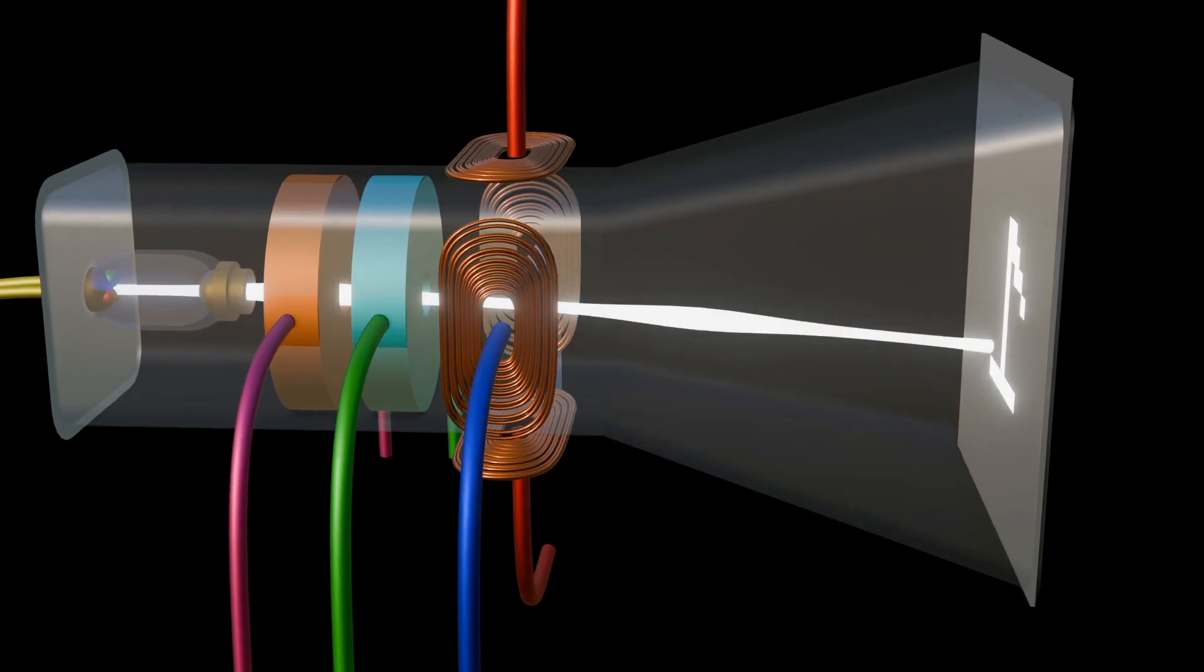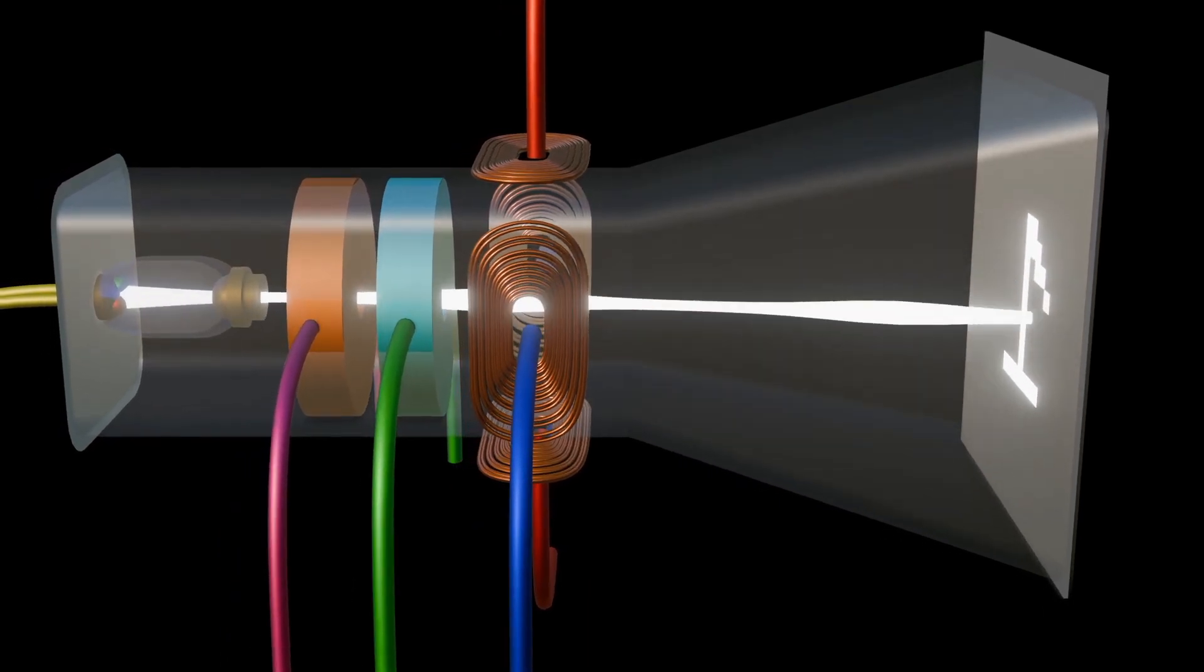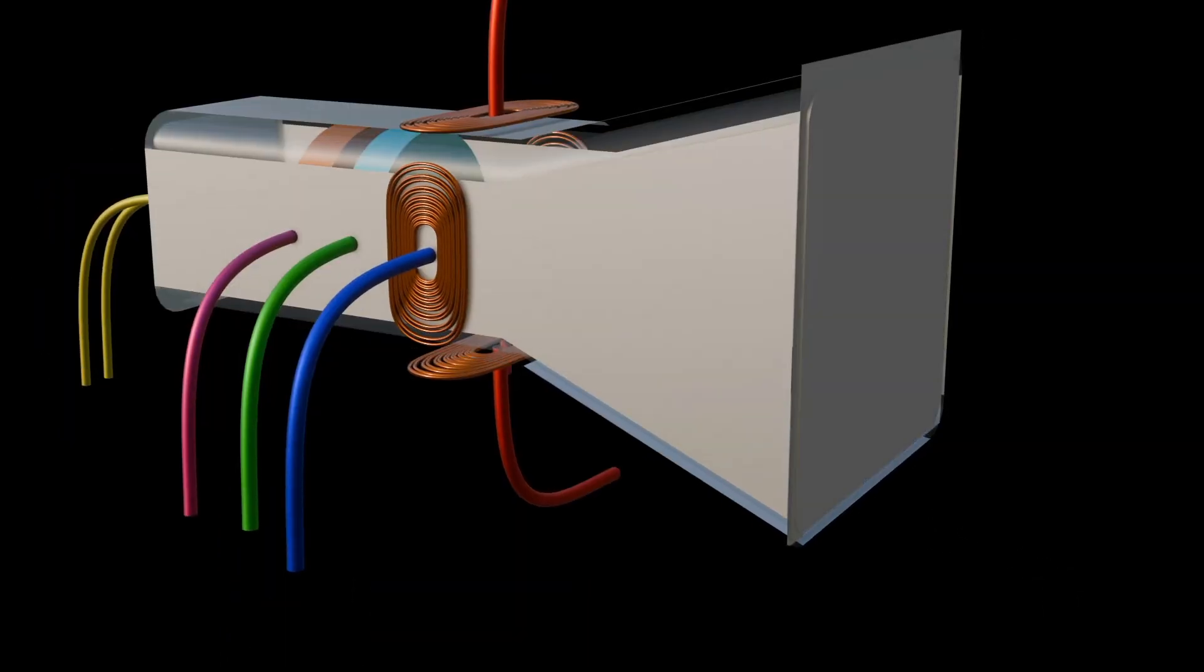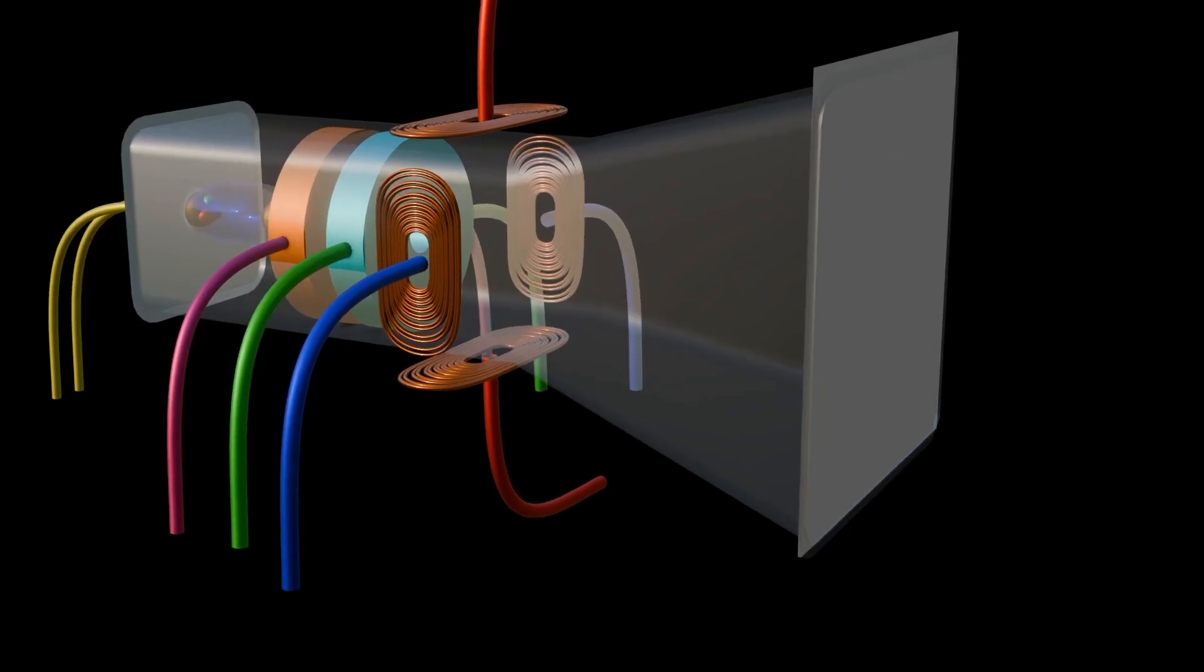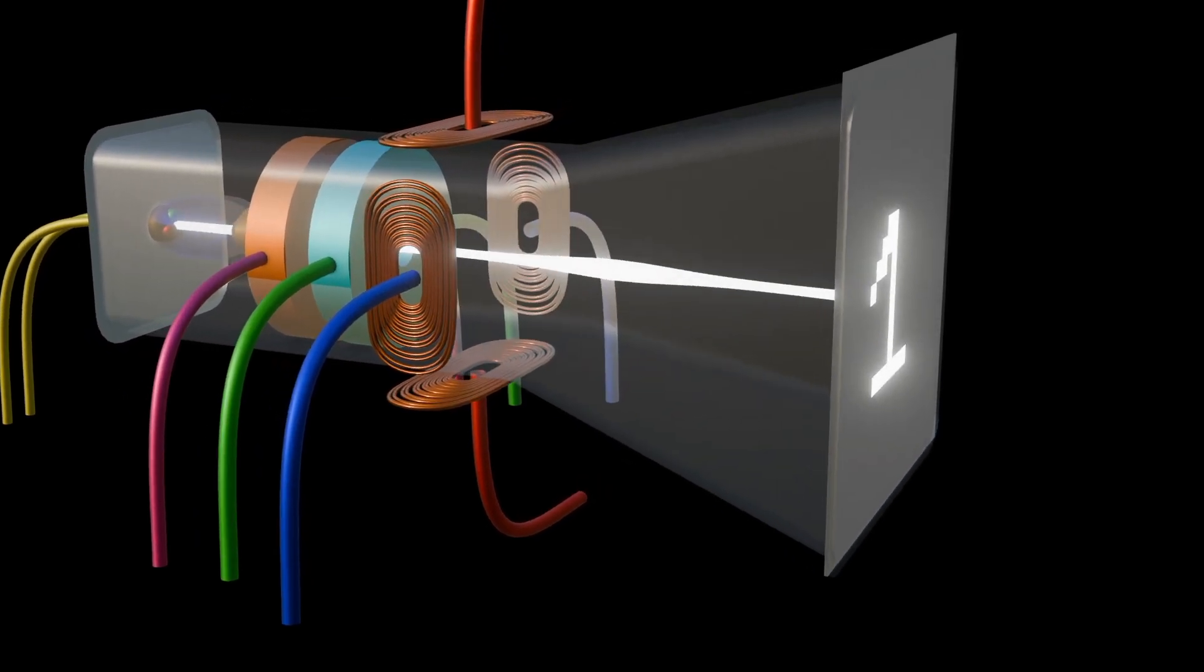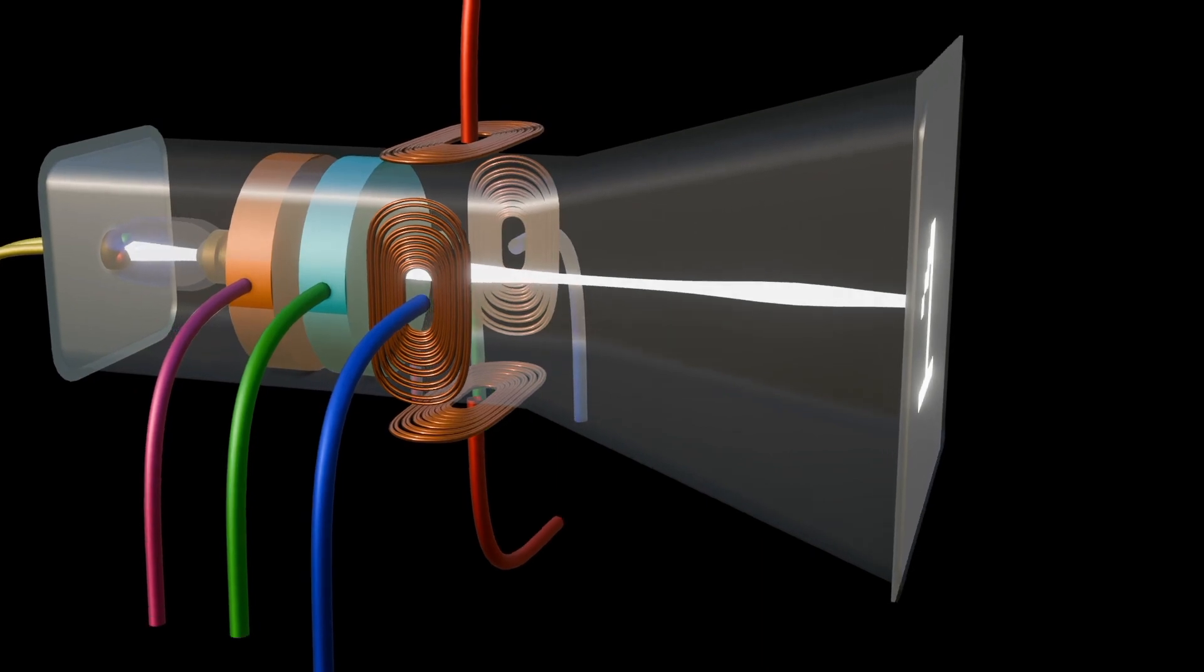This process occurs at a very high speed, typically 50 to 60 times per second, which gives the illusion of a continuous image rather than a series of individual lines.